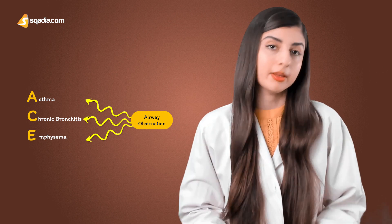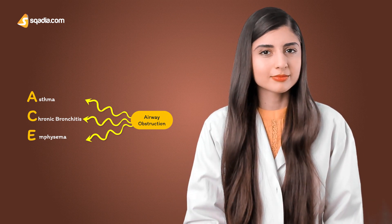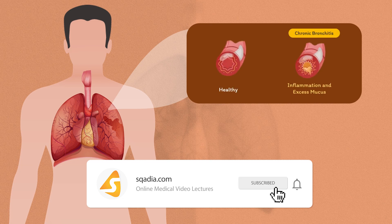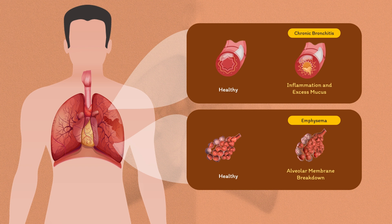Now we will discuss asthma in detail, but do you remember the other two? Chronic bronchitis is defined as inflammation and irritation of bronchial tubules; the irritation of these tubes causes mucus to build up. Emphysema is defined as abnormal permanent enlargement of the air spaces distal to terminal bronchioles, along with the destruction of alveolar walls without obvious fibrosis.